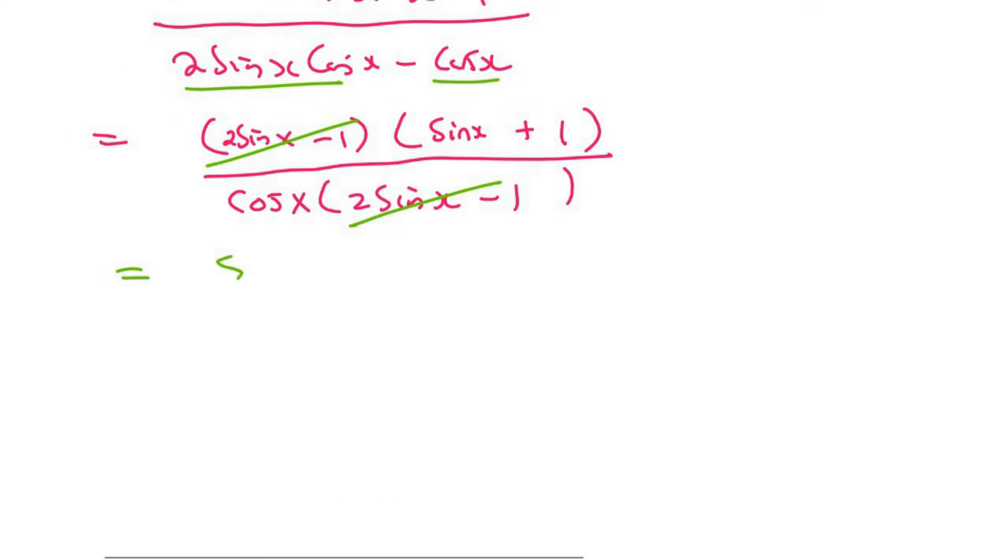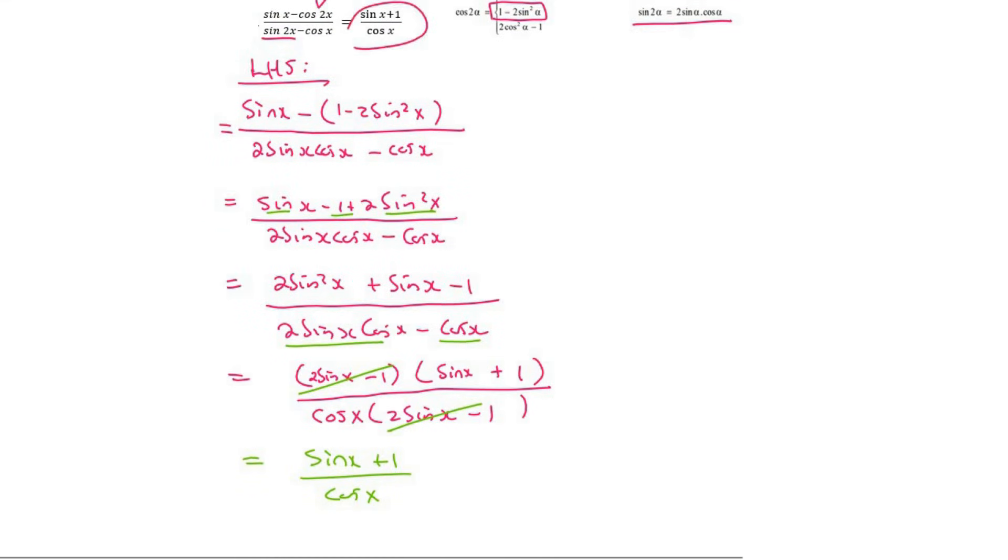And so we're left with sinx plus 1 over cosx. And if we look at the original question, that's exactly what we were trying to get. And so we can say therefore the left hand side is the right hand side.